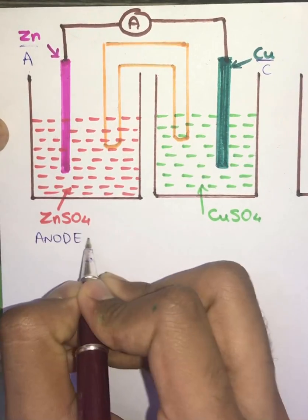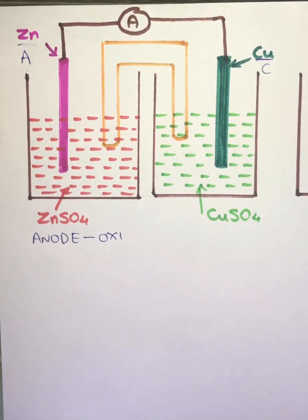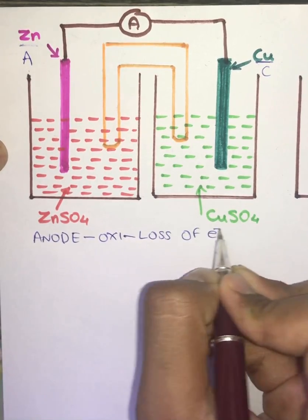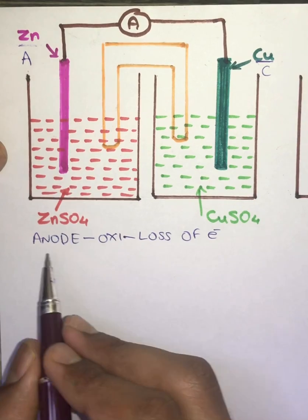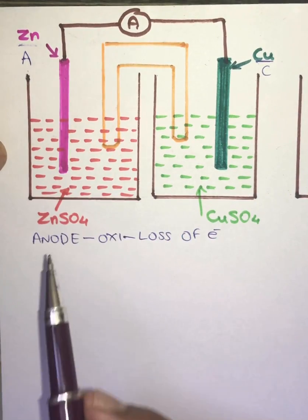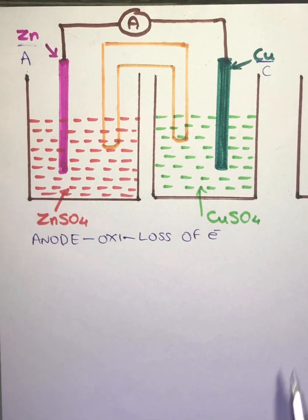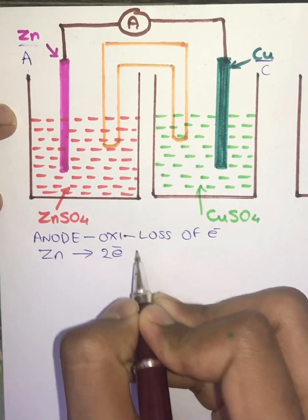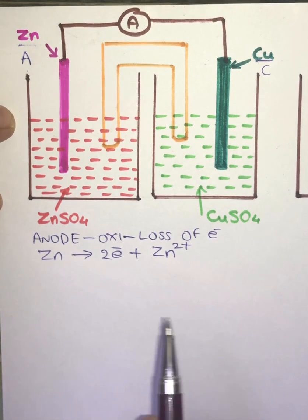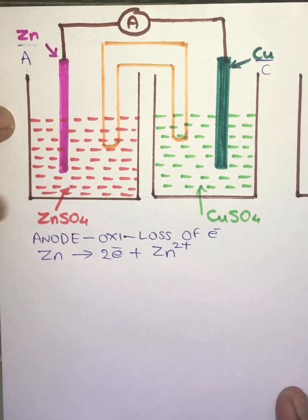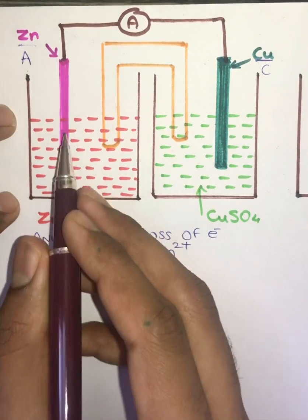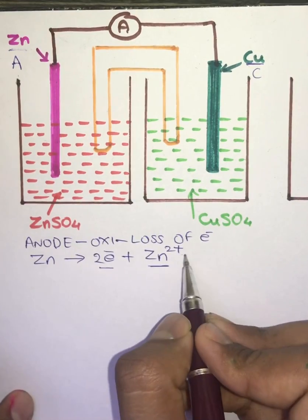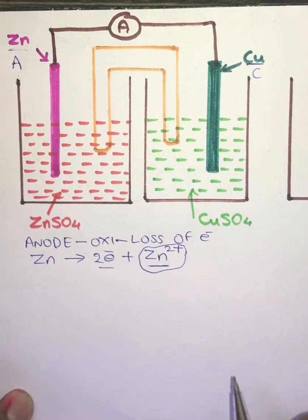At the anode, an oxidation reaction is taking place. Oxidation is nothing but loss of electrons. So at the anode, Zn has to undergo oxidation — it has to lose electrons. Zn will lose electrons and become Zn2+, a positive ion of Zn. The Zn atom dissociates into two electrons and a Zn2+ ion, and the Zn2+ ions go into the electrolytic solution.